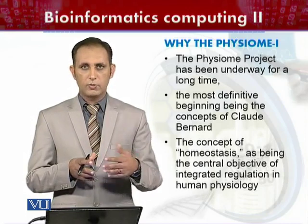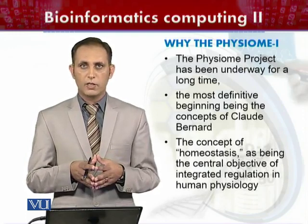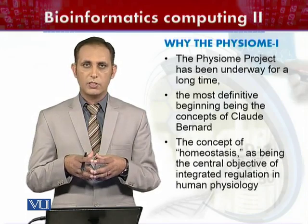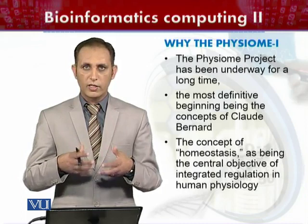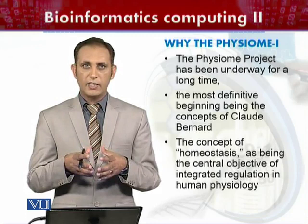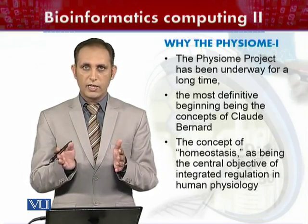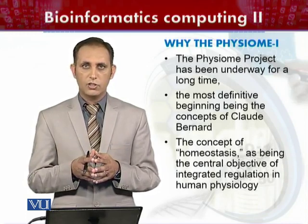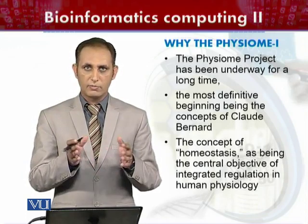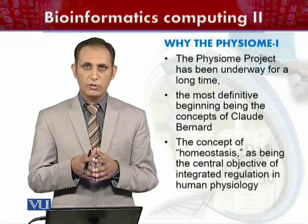Homeostasis is basically the result of the functioning of the whole organism — how the system and the organism maintain their parameters within a range. If the system is operating within that range, it means the functioning of that organism is normal. If the boundaries of that range get violated, then there is an abnormality or a disease condition.